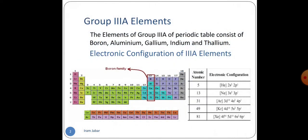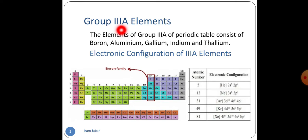First of all, we will discuss elements which are present in Group 3A. Group 3A contains boron, aluminium, gallium, indium and thallium. They all are placed in Group 3A because they contain 3 valence electrons.